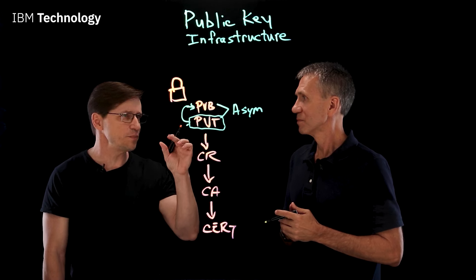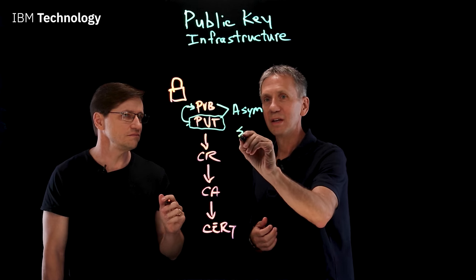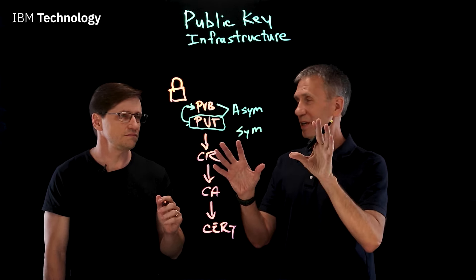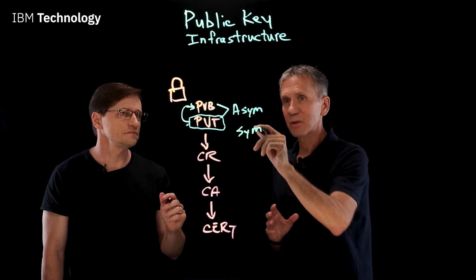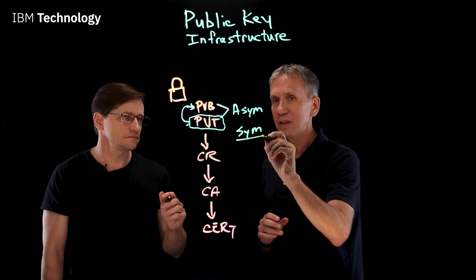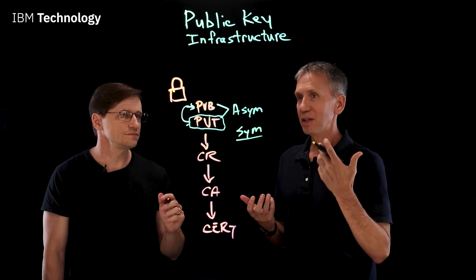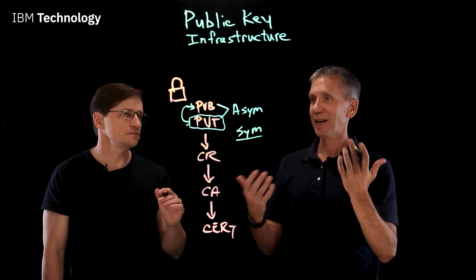Before we leave that, what would symmetric encryption come into play here? Yeah. So symmetric cryptography is similar but different. With asymmetric, we have two keys. That's the asymmetry. One's public, one's private. With symmetric, we have only one key. That one key is used to encrypt. That one key is used to decrypt. Does double duty. Exactly. So it's symmetric. It has symmetry. It's the same key on both sides.